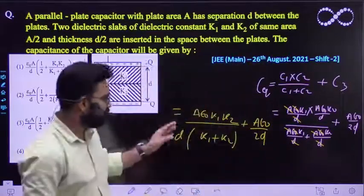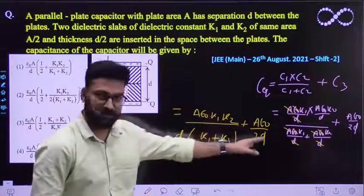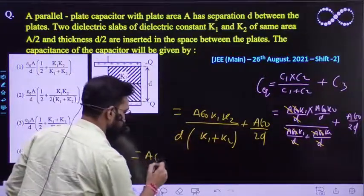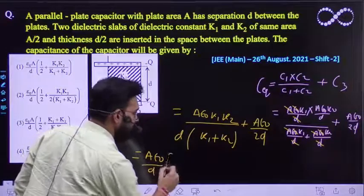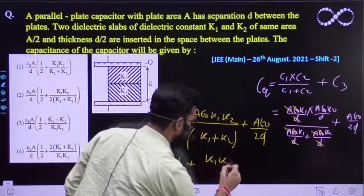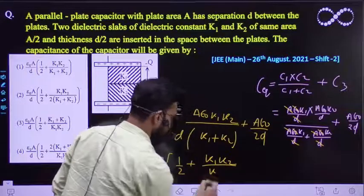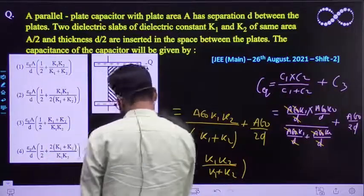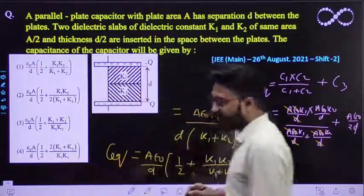Isma se, aap a epsilon naught by D common le lo. To ab kya aayega yahan par further? A epsilon naught by D common lenge. To andar kya raha jayega? Half plus K1 K2 divided by K1 plus K2. Yehi expression aa raha hai. So this is the effective capacitance that we are getting.